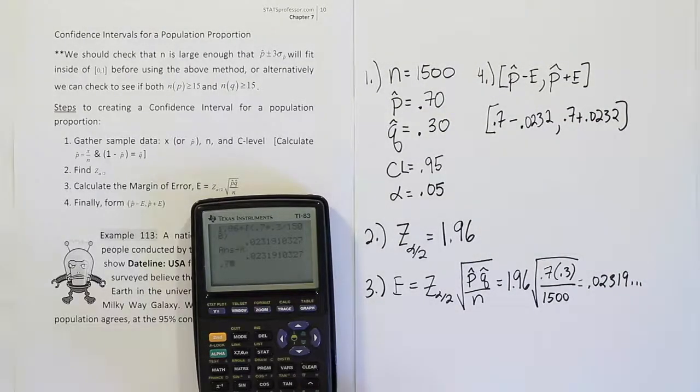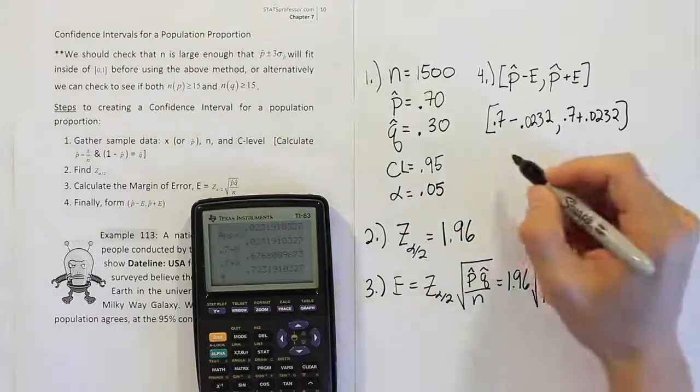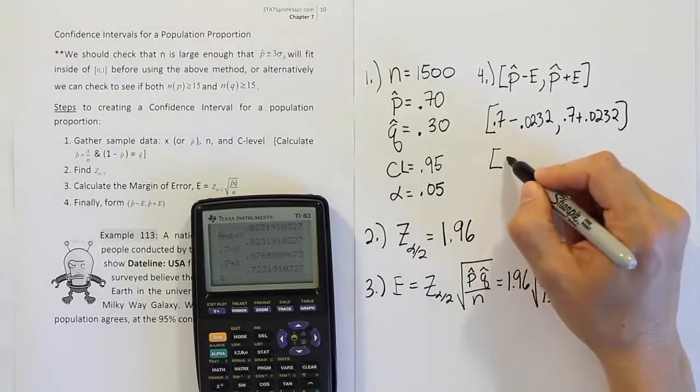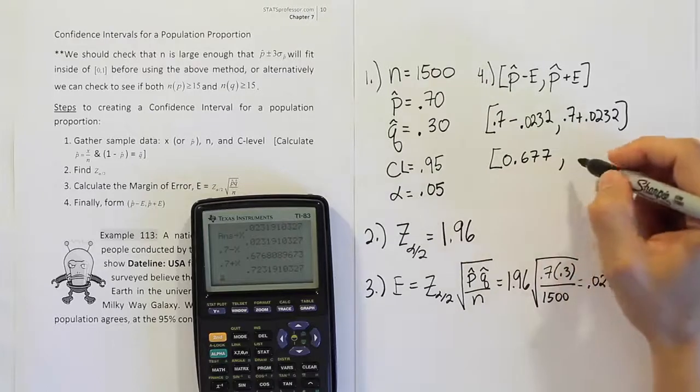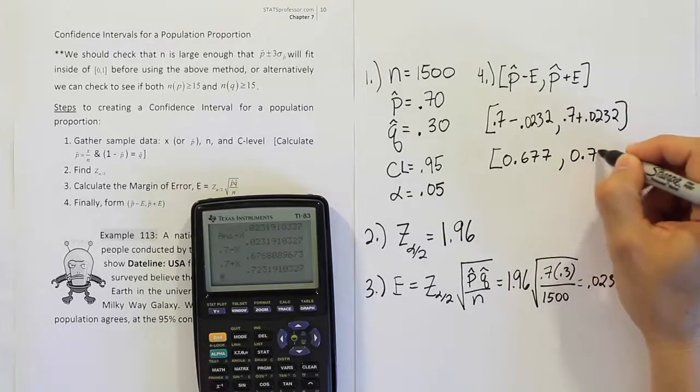So, 0.7 minus that error. And the same thing, but plus the error. Alright, so we get a total range of 0.677 up to 0.723.